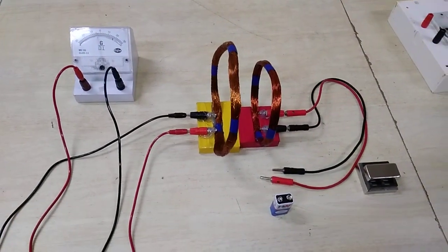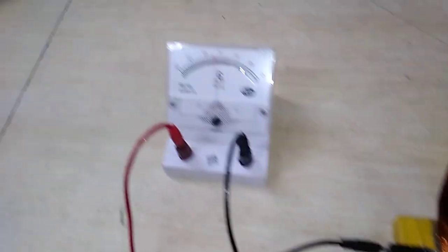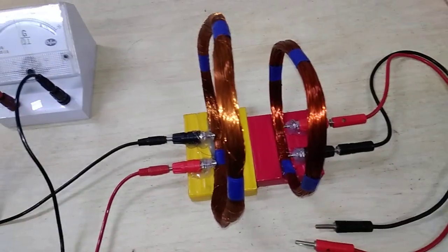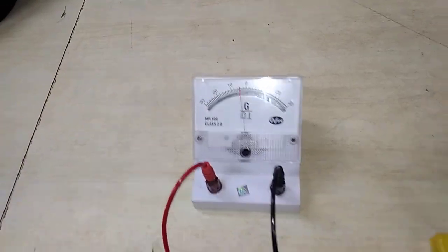These are the components in which we have used a battery of 9 volts, a neodymium magnet, two coils, one has a winding of 500 turns and another has a winding of 220 turns, and a galvanometer to detect the current presence.